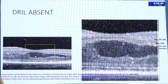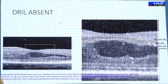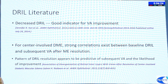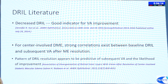Here is another photograph showing what initially looks like DRIL but is actually a large cyst — you can differentiate because DRIL is absent in this case, and the prognosis is better. Decreased DRIL is a good indicator of visual acuity improvement. For center-involving diabetic macular edema, strong correlations exist between baseline DRIL and subsequent visual acuity after edema resolution; the pattern of DRIL resolution is also predictive of visual acuity improvement.